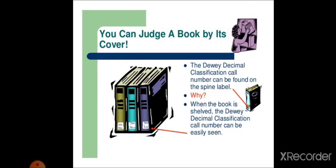You can judge a book by its cover. This was the thinking of Melville Dewey. The Dewey Decimal Classification call number can be found on the spine label. Why? When the book is shelved, the book's Dewey Decimal Classification call number can be easily seen.